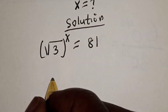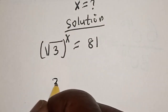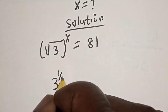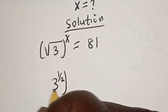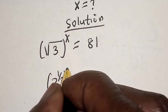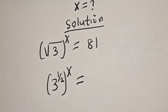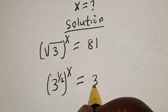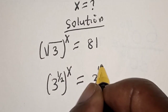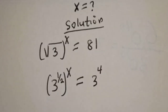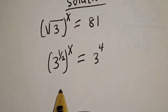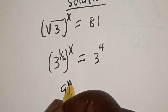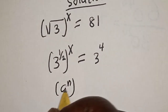This is the same thing as 3 raised to power 1 over 2, raised to power s, is equal to 3 raised to power 4. Now remember this rule: if you have a raised to power n, raised to power m...